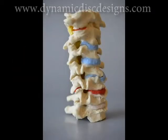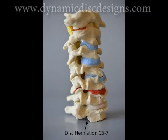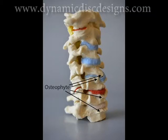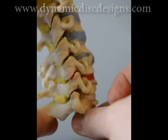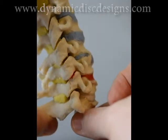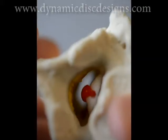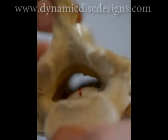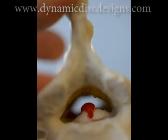Dynamic Disk Designs introduces a multi-level cervical C1 through C7 dynamic model. This model has been constructed with identical bony properties with the recreation of the soft tissues. A hypermobile elastomeric disk has been constructed at the C5-C6 level, with C6-7 demonstrating a central herniation under load.